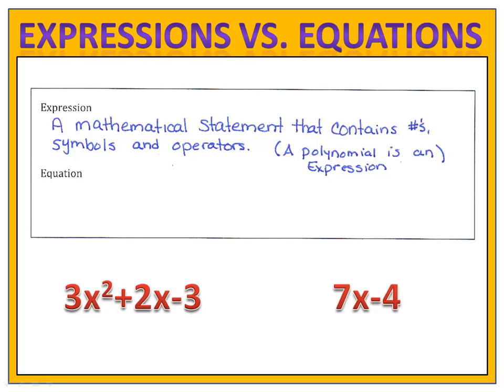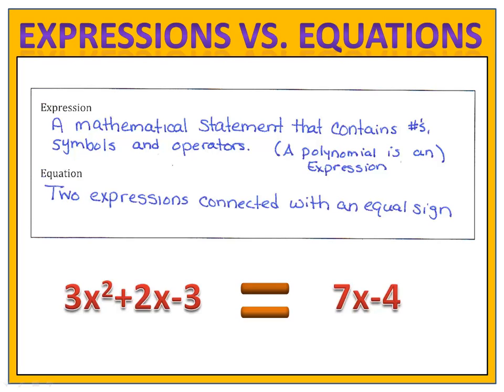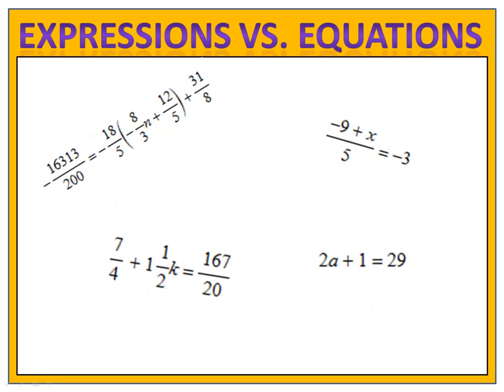Each of these are expressions. When we connect them with an equal sign, we have what's called an equation. An equation is simply two expressions connected with an equal sign. We've worked with all kinds of equations, including fractions and decimals, and we've seen all kinds of expressions as we work with simplifying polynomials.